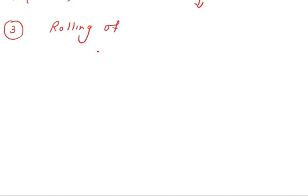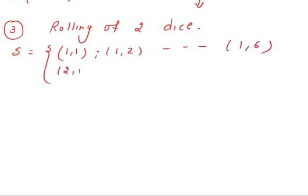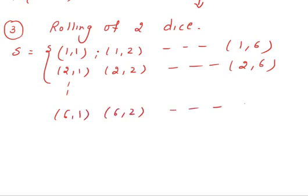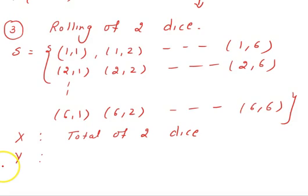Now consider rolling two dice. For the same experiment, we can define two different random variables. The sample space includes all pairs from (1,1) up to (6,6). Let capital X be the total of the two dice, and capital Y be the absolute difference of the two dice.